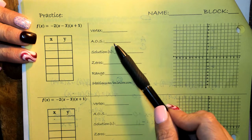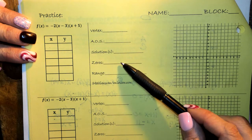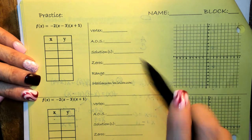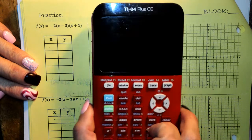So we want to do the vertex, the axis of symmetry, the solutions, the zeros, the range. Is it a max or a min? So let's start off. Let's just put it in our calculator first.